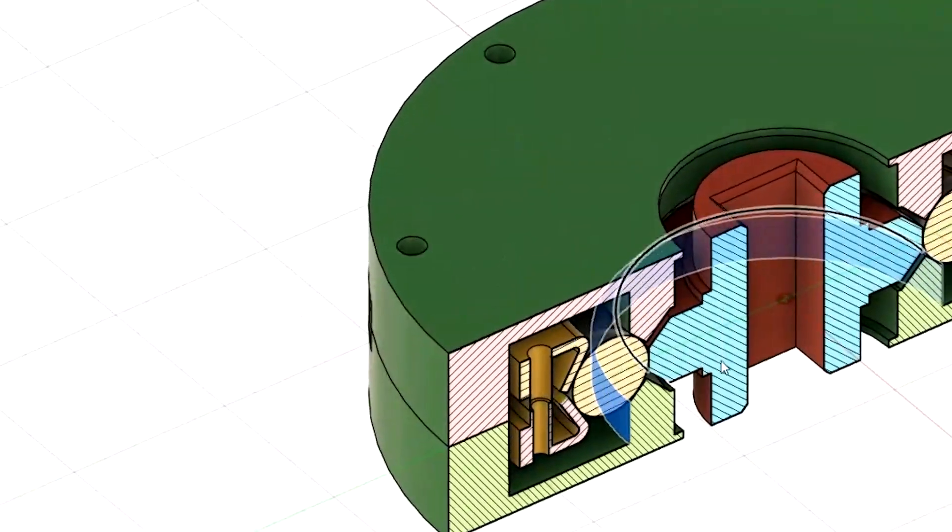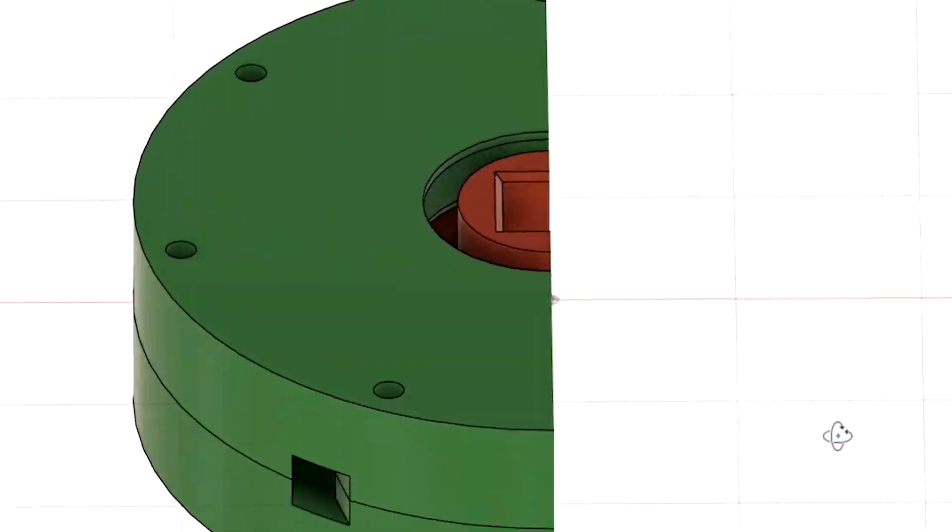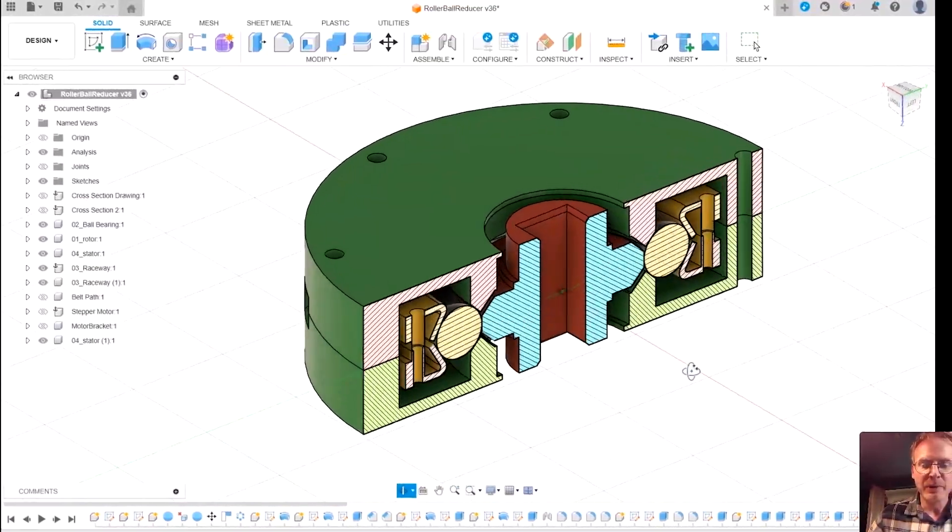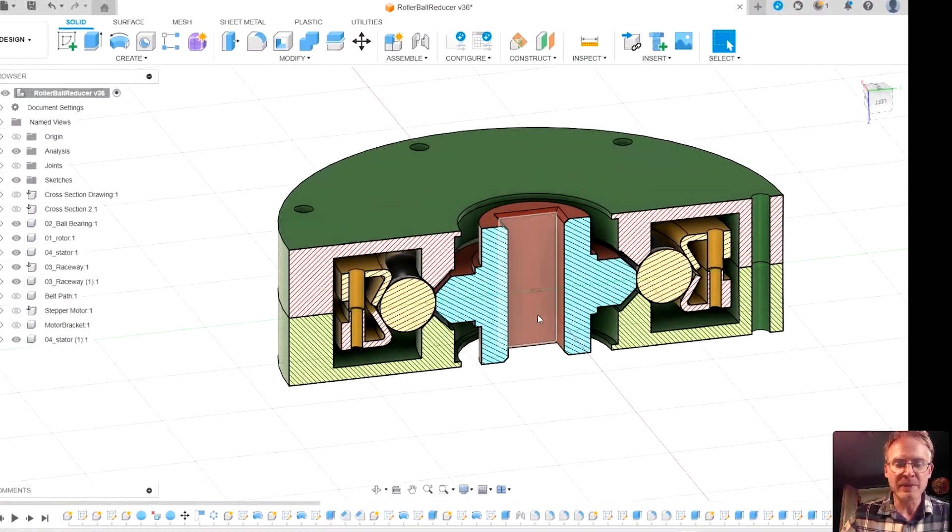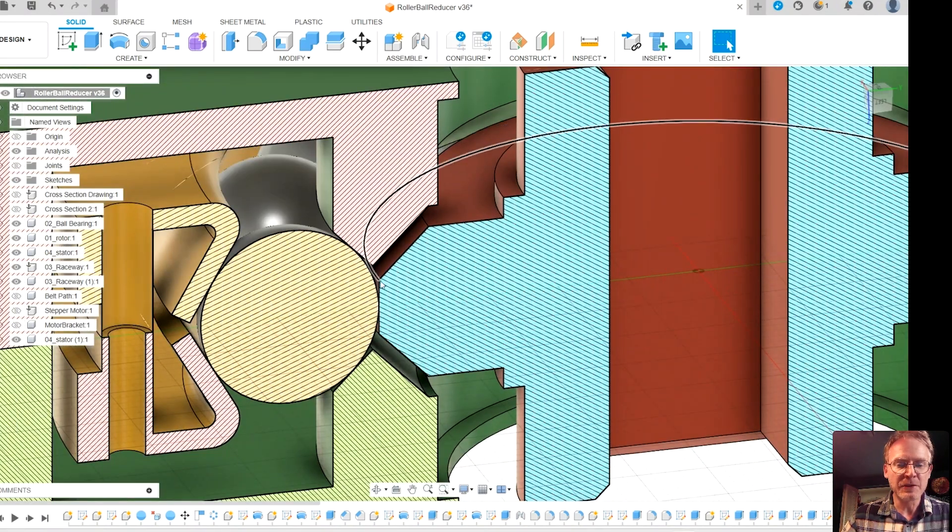If you could make it roll truly without slipping, you'd have a really neat telescope mount or something. And there's really pretty high gear ratios possible, especially if you make this contact surface closer to the same radius as this contact surface.